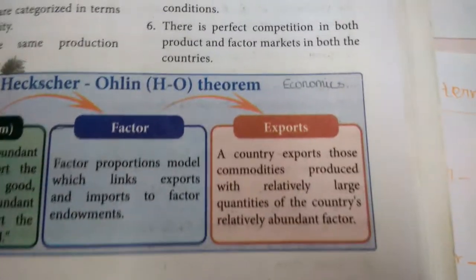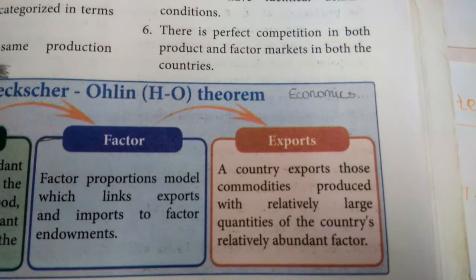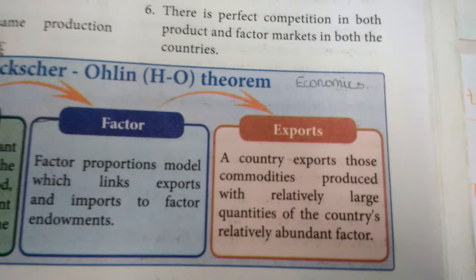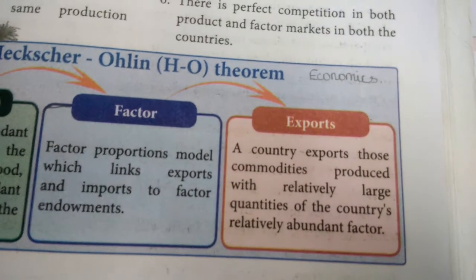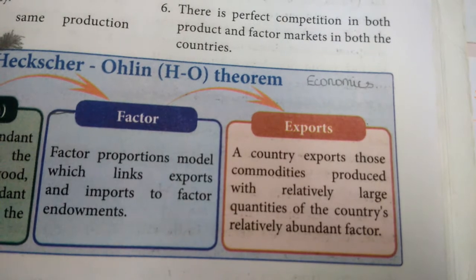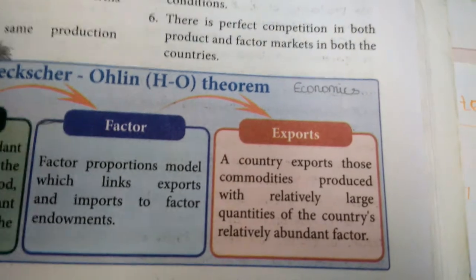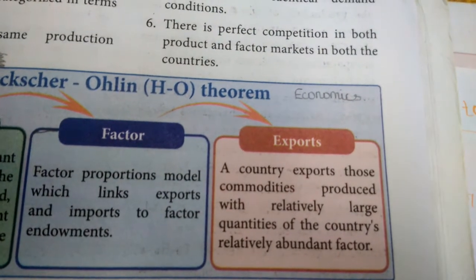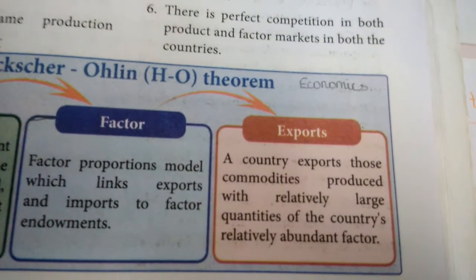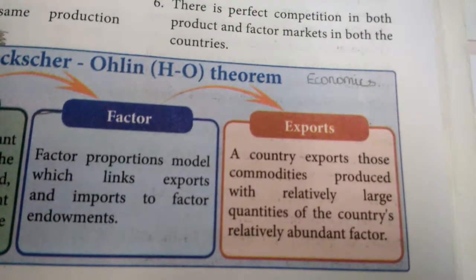A country exports those commodities produced with relatively large quantities of the country's relatively abundant factor. If America has more capital-intensive goods, America will export capital-intensive goods to India. India will export food items to America. By using abundant factor endowments, nations can export to other nations.